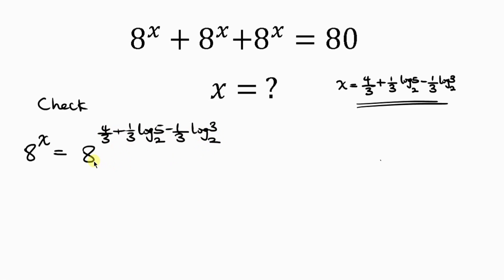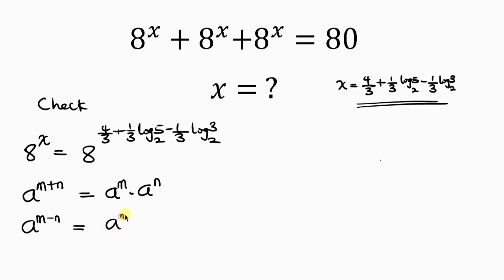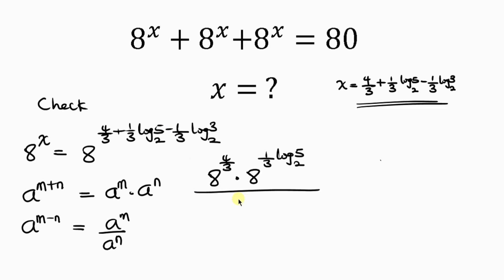Now we simplify further by applying the property of indices that says: a to the m plus n is the same as a to the m times a to the n. But when we have a to the m minus n, this equals a to the m all over a to the n. Addition is associated with multiplication, while subtraction is associated with division. So this becomes 8 to the 4 over 3, times 8 to the 1 over 3 log 5 base 2, all over 8 to the 1 over 3 log 3 base 2.